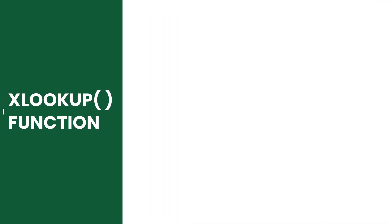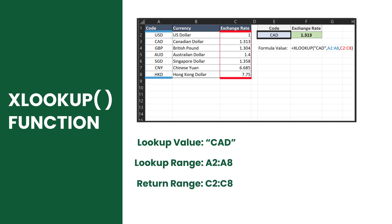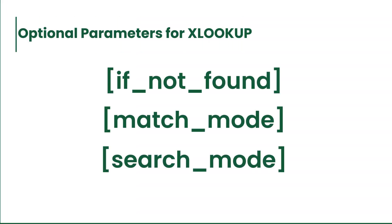The syntax format for XLOOKUP is as follows: first is the lookup value, next is the lookup array which is your range to search, and the return array which is your range to return. There are also optional parameters available; for an advanced guide on XLOOKUP, more details can be found on our blog — link in the description below.